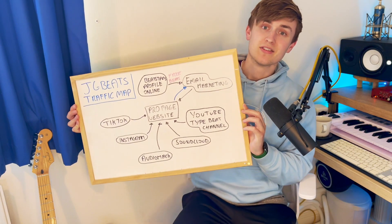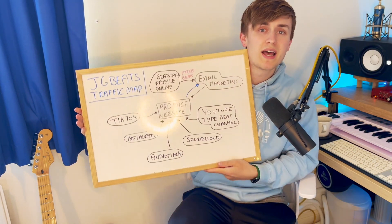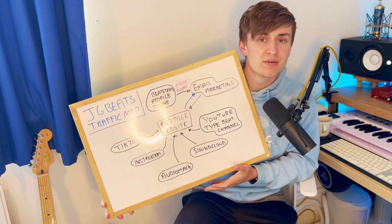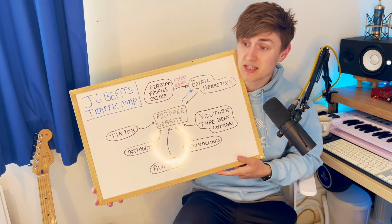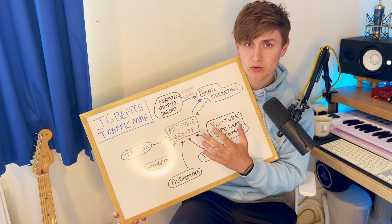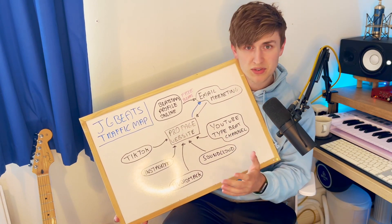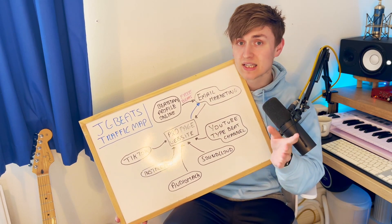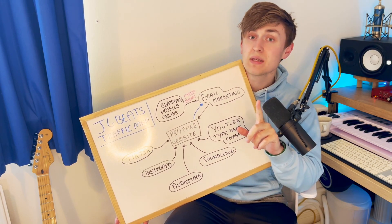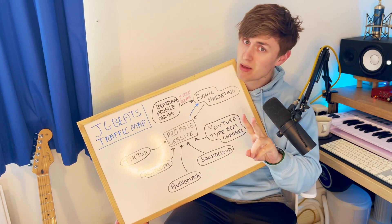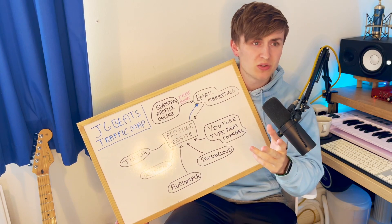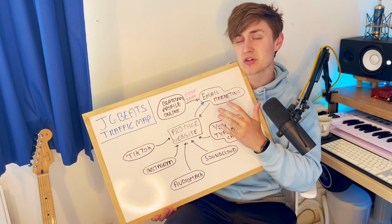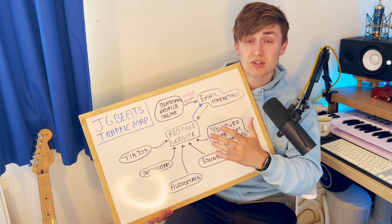So the big reveal: we're whipping out the whiteboard today. This is basically my traffic map for my JG Beats beat-selling business. There are a couple of different things we're going to go into detail on. The end goal for me is two different places — the Pro Page and the Website. You may be wondering why I've got two beat stores technically in website form, and there's a very good reason for that.